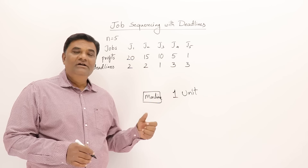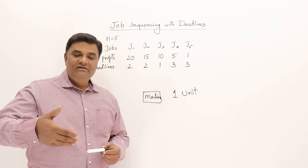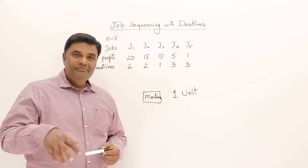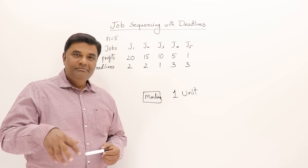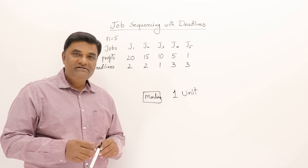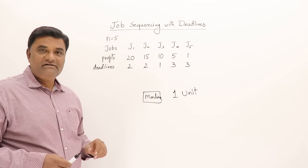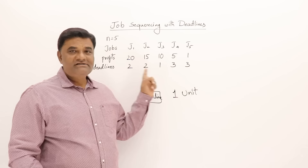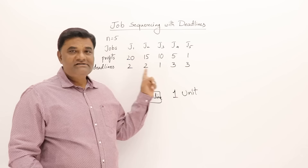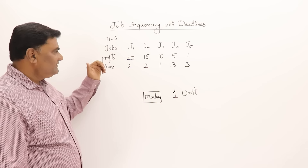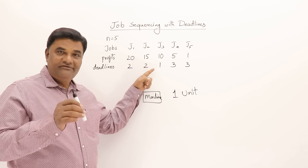A good example is a DTP operator or a typist who prepares legal documents on bond paper. He completes each job in one hour. Now, assume that in the morning he has opened the shop and these five people are standing there for getting their jobs done. Each person has their own deadline.